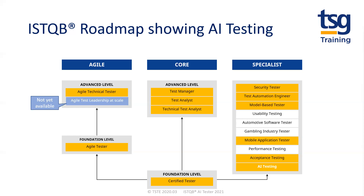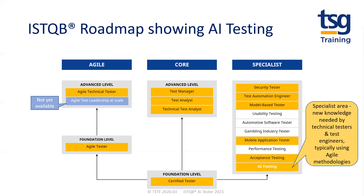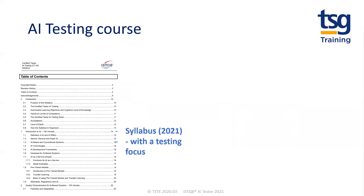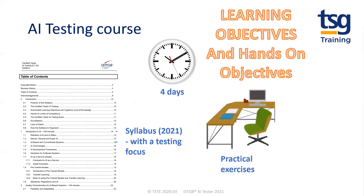The AI for testers course is part of the specialist stream. It's a specialist area giving new knowledge to technical testers and test engineers, typically using agile methodologies. As you can see from the arrows, all certifications require the foundation certified tester as a prerequisite. The material is taught over four days using slides, 17 practical exercises, discussion and practice multiple choice questions. This supports delegates preparing for the one-hour, 14 multiple choice question exam set after the course.